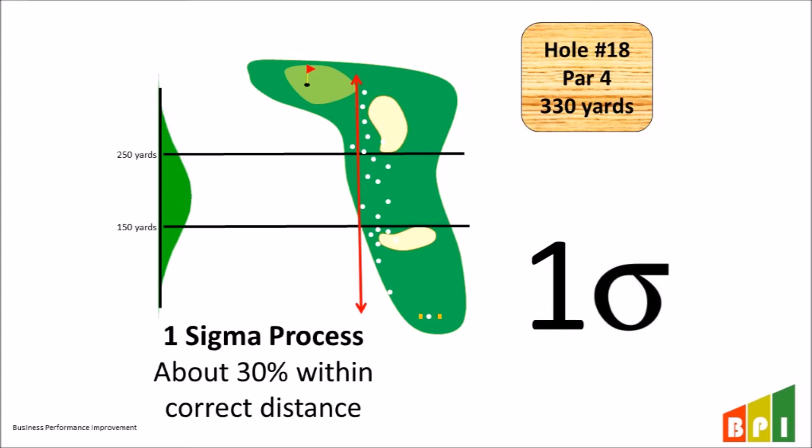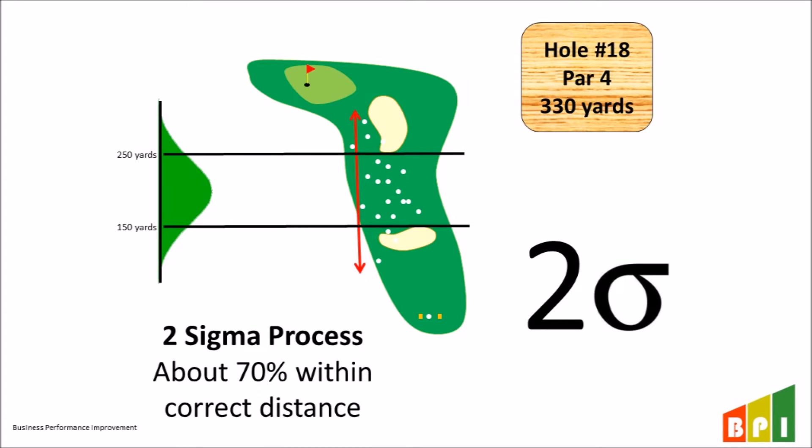A two sigma process is a little better, where 70% of the tee shots will likely end up inside the limits. You can see that the variation has been reduced, but we still have shots above and below the limits. A three sigma process shows even less variation, with a 93% chance of staying within the limits. We are not looking at the side-to-side variation in this example, but that could be another way of determining how well you will stay on the fairway, not just staying away from the sand traps.